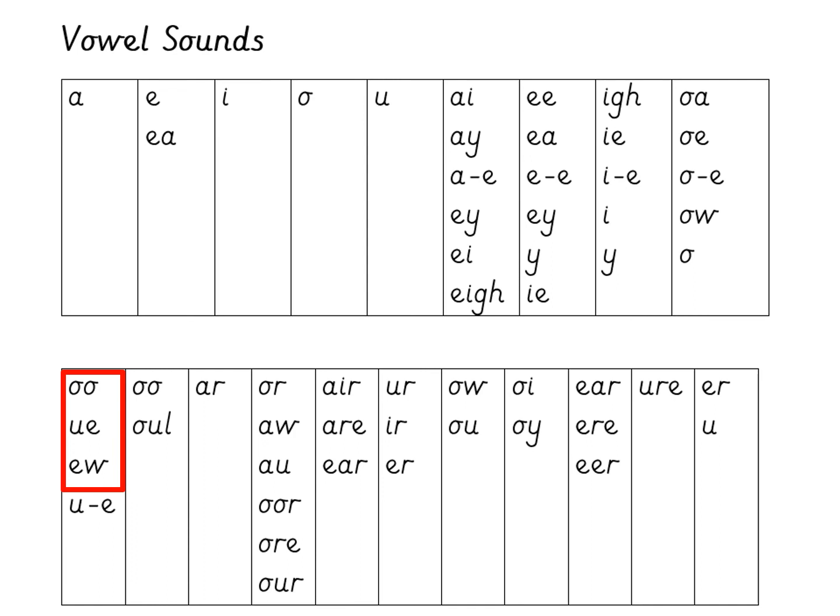Take a look at the graphemes in the red box. We already know that two O's can make an OOO sound, don't we? And we also already know that U and E make an OOO or YOU phoneme.